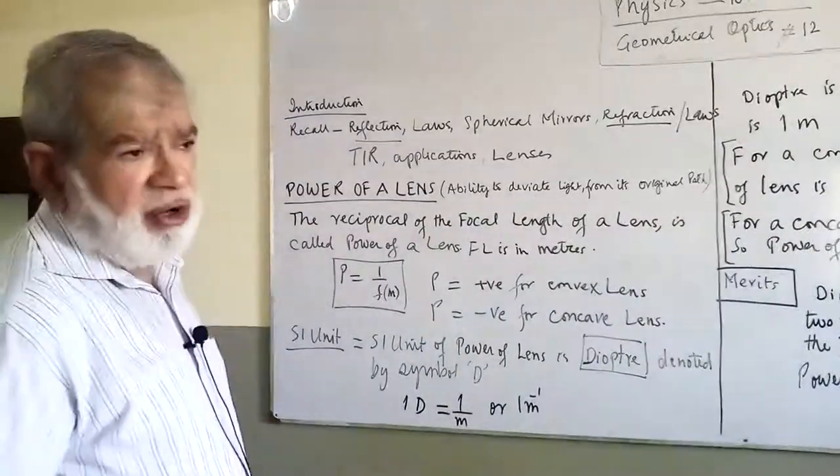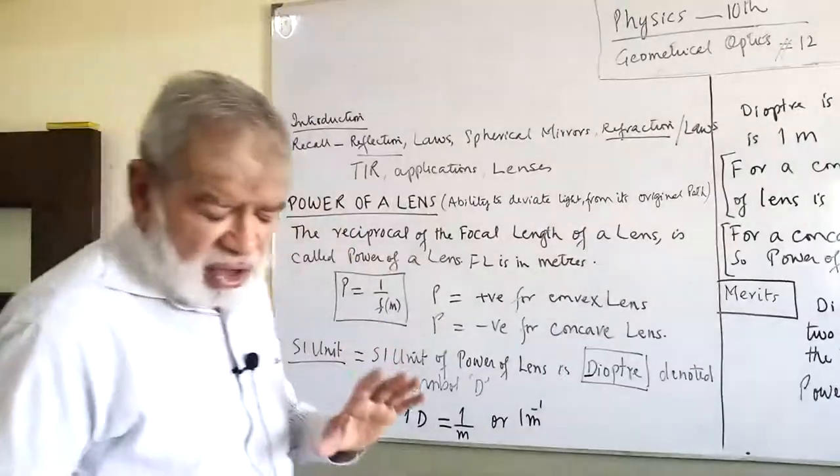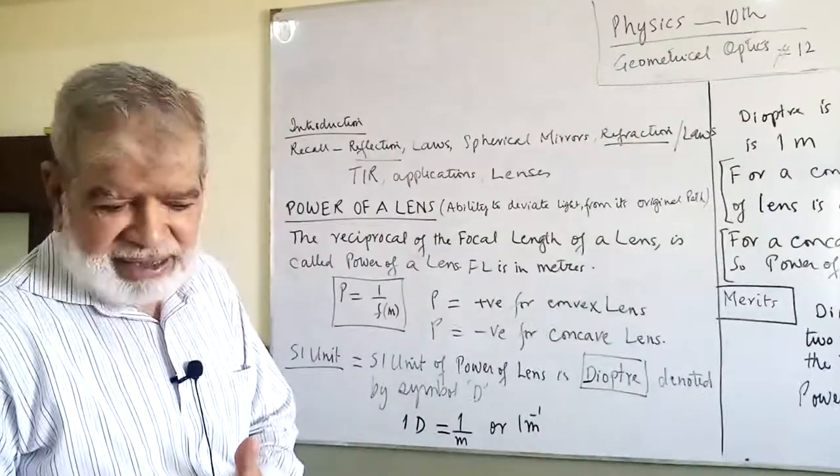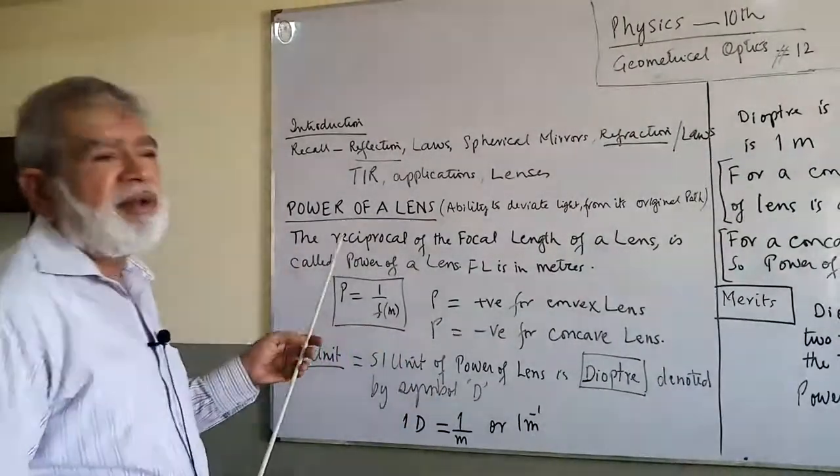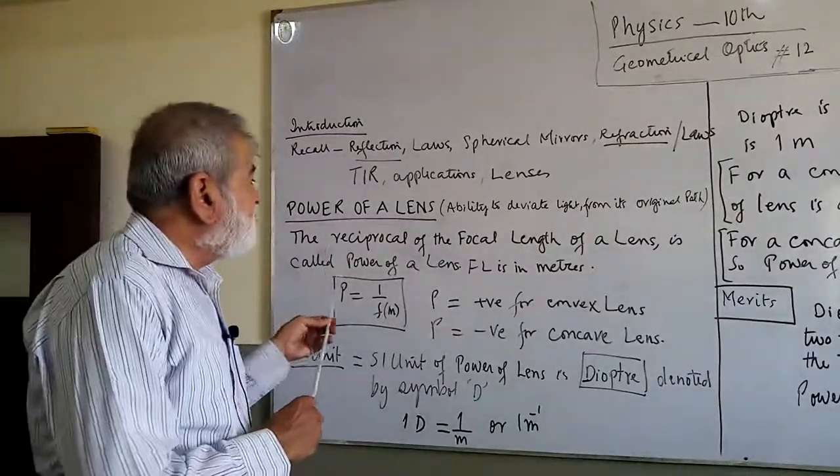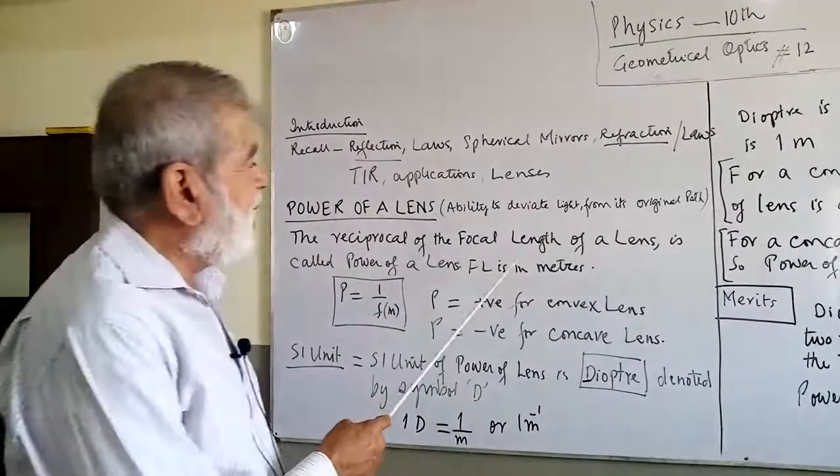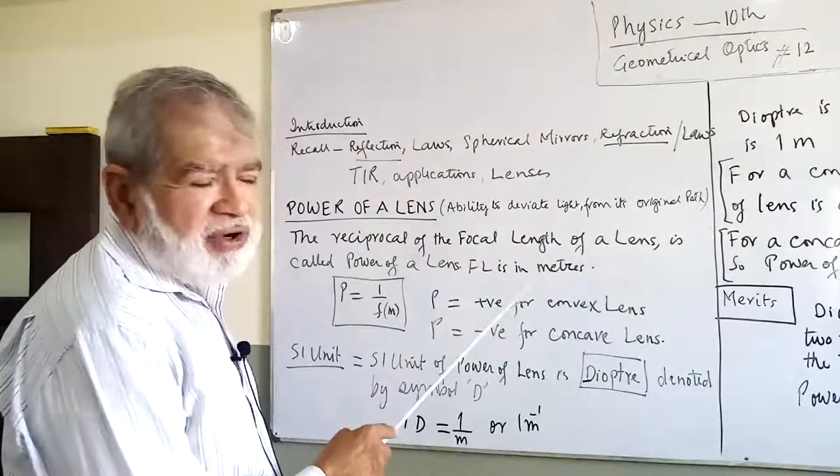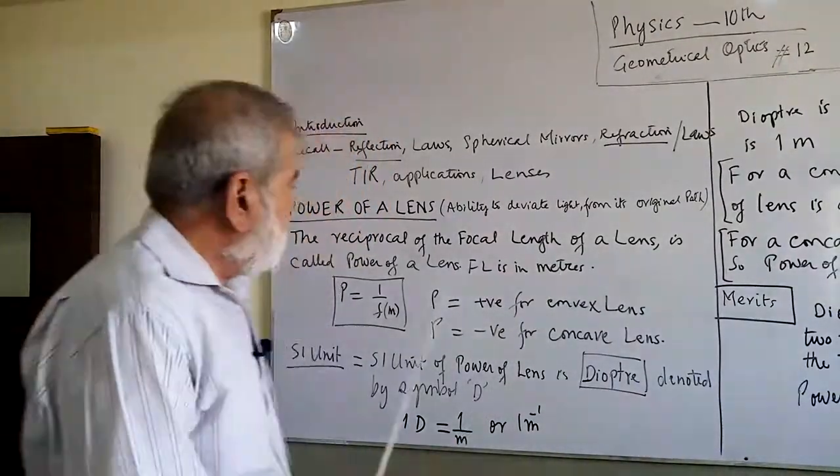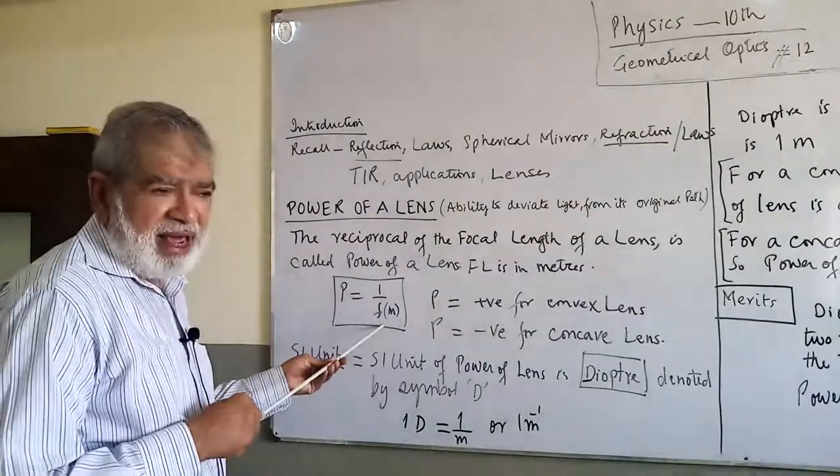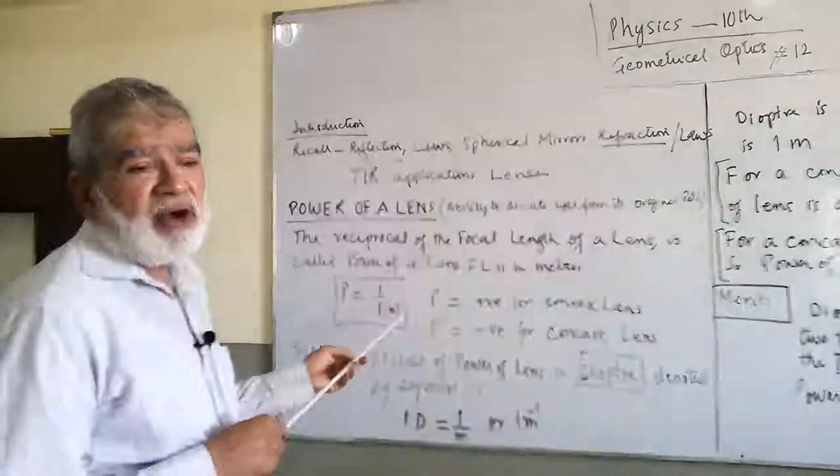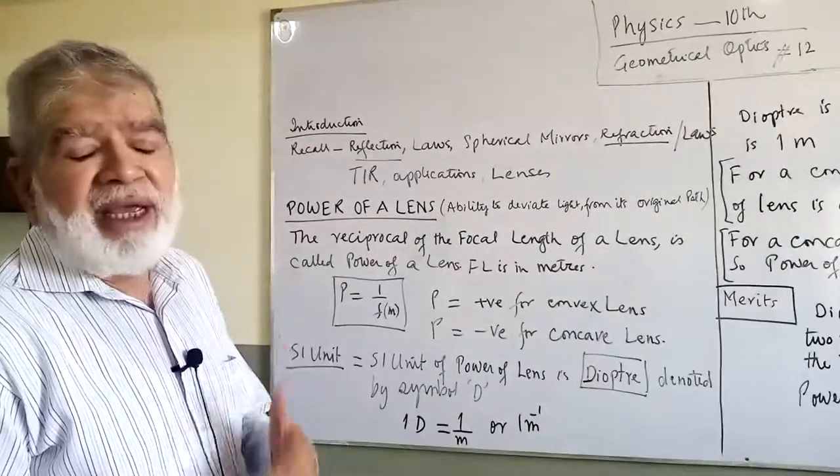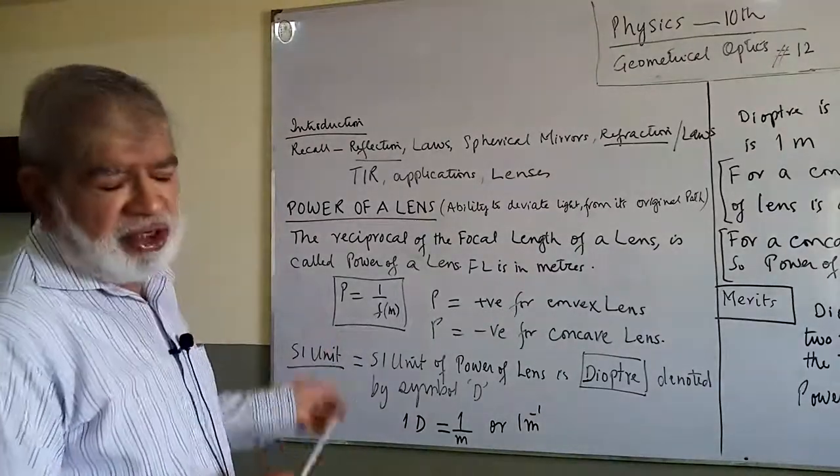Please pay attention to understand the concept of power of a lens. It is the ability of the lens to deviate light from its original path. How to calculate it? The reciprocal of focal length which is in meters. Power of a lens P is equal to one over f, where f means focal length. This focal length must be in meters. Please remember this, it is the SI unit, system international. Length must be in meters.